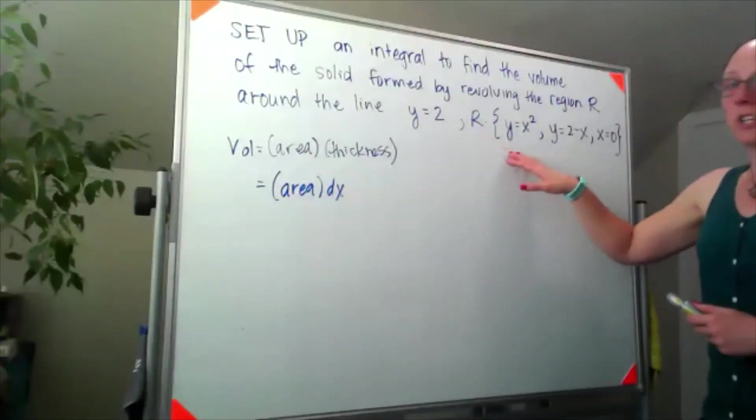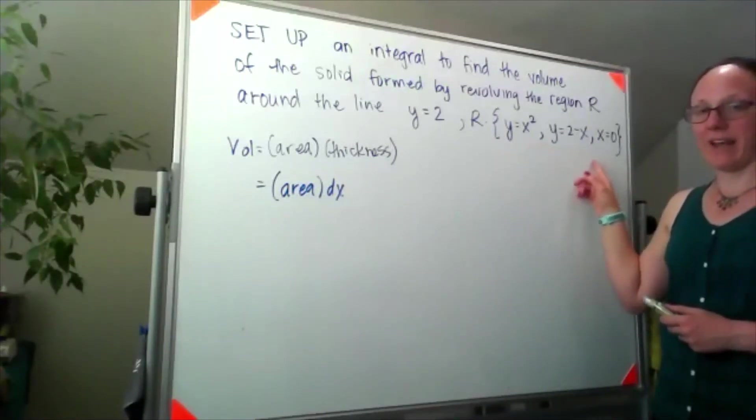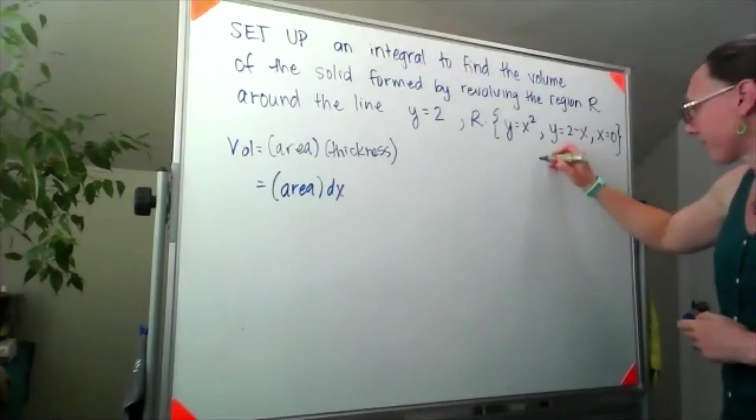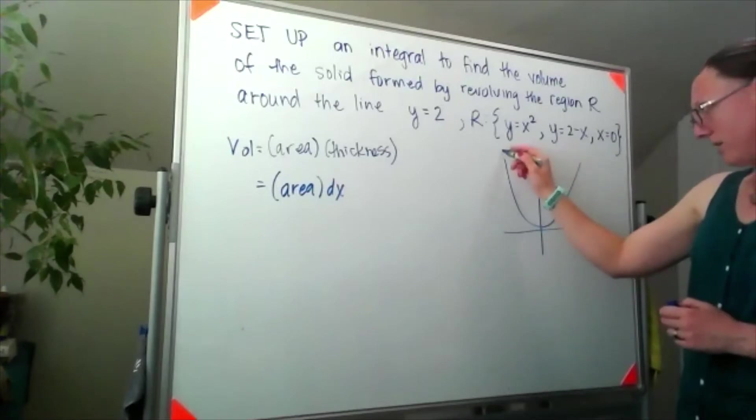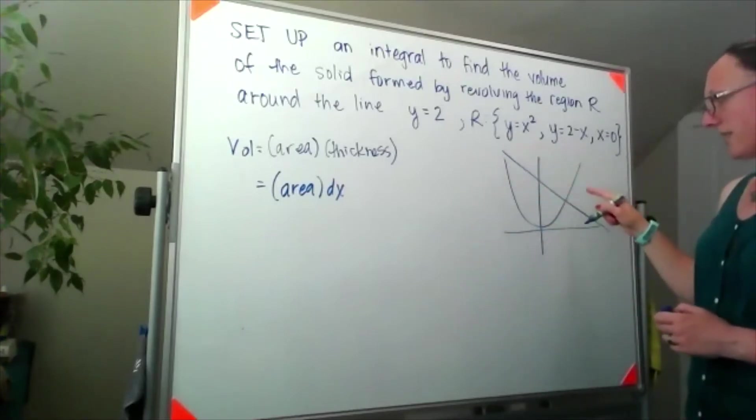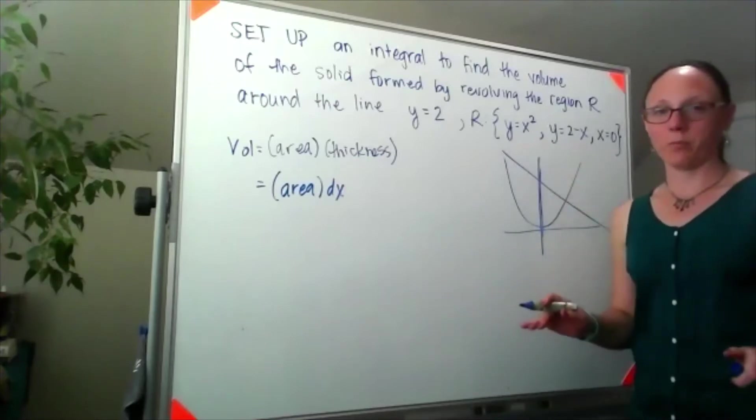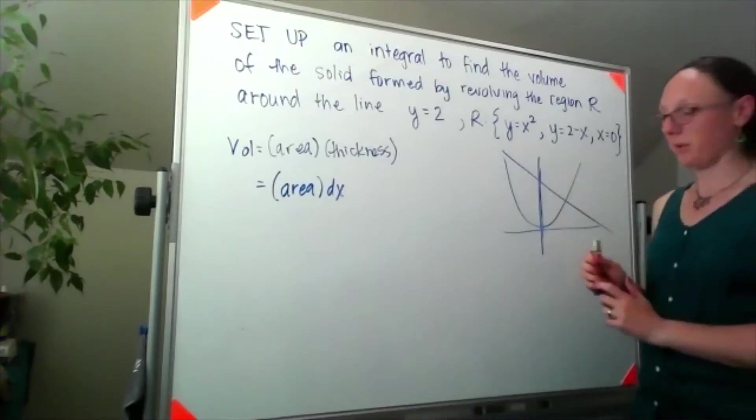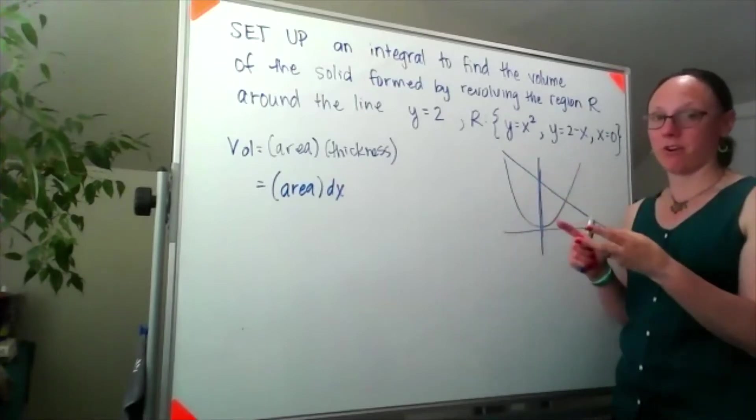Our region is the region bounded by y equals x squared, y equals 2 minus x, and x equals 0. Y equals x squared, 2 minus x, and x equals 0. Okay, I already wrote a bad problem because there are actually two regions that are bounded by those three functions.